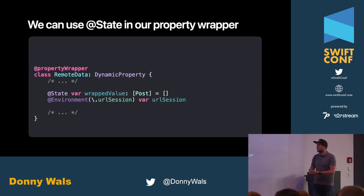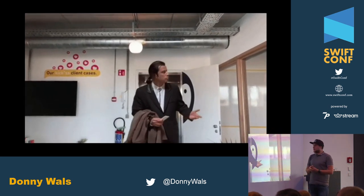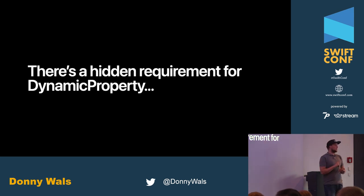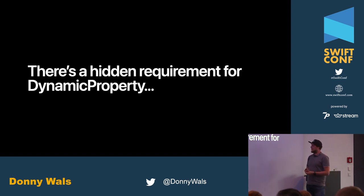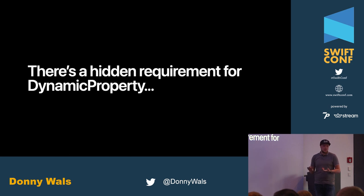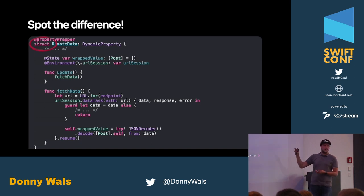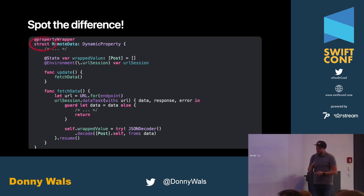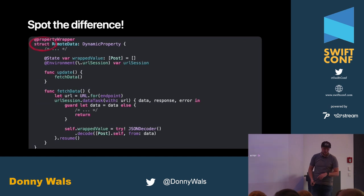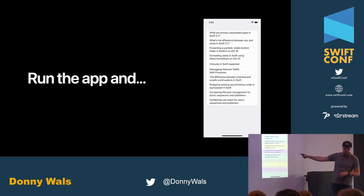Still doesn't work. There's a sneaky hidden requirement for DynamicProperty that they don't document — you kind of have to figure it out on your own. Can you spot the difference? It's very small: I had to make this a struct. If the RemoteData object is a class, SwiftUI says no — give me a struct. No code logic changed, same @State property, same update function, everything else the same. Run the app now — yes! We have some posts. It works.